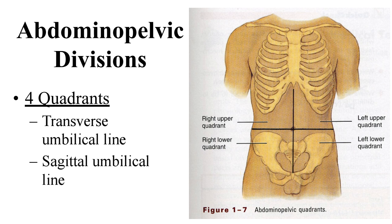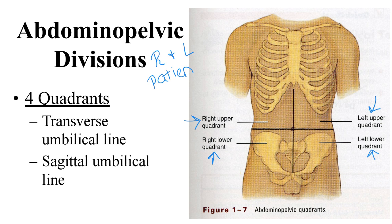The abdominal pelvic region can be divided two different ways. The simpler way divides it into four quadrants: right upper, left upper, left lower, and right lower. Pay attention to right and left — it refers to the patient's right and left, since their face would be facing you.